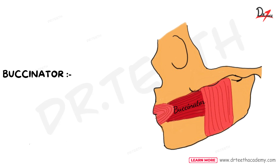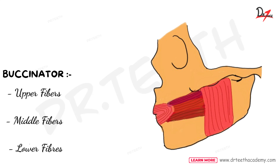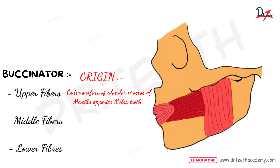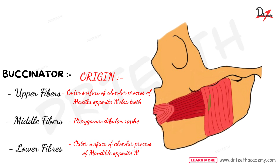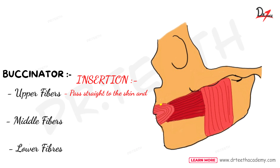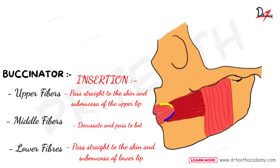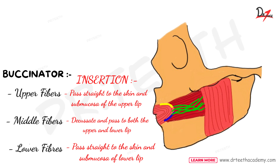The buccinator has three fibers: upper, middle, and lower. The upper fiber originates from the outer surface of the alveolar process of maxilla opposite the molar teeth. The middle fiber originates from the pterygomandibular raphe. The lower fiber originates from the outer surface of the alveolar process of mandible opposite the molar teeth. The upper fiber passes straight to the skin and submucosa of the upper lip, the lower fiber to the lower lip, and the middle fiber decussates and passes to both the upper and lower lips.